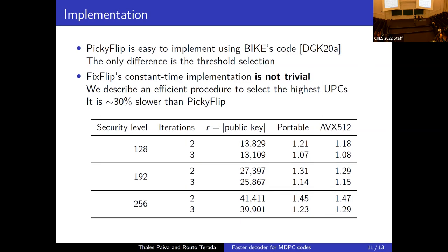Results show speedups for all three security levels provided by BIKE. For two iterations, they obtain between 1.21x and 1.45x speedup, and the implementation is efficiently vectorizable — maintaining a nice speedup in the AVX-512 implementation as well.